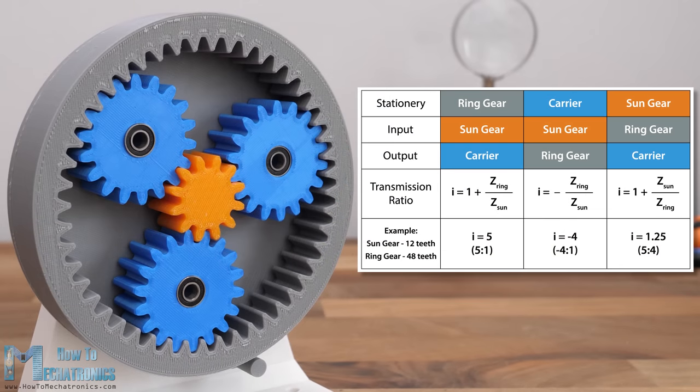Of course the transmission ratios of the gear set depend on the gear teeth number. Here are the formulas for calculating the transmission ratios of a planetary gear set depending on which gear is the input and which gear is held stationary.